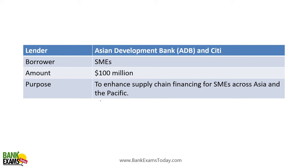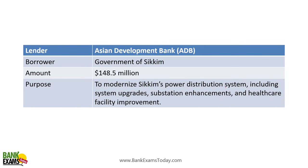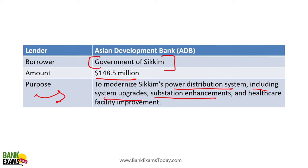Asian Development Bank — the borrowers are Citi and SMEs — 100 million dollars to enhance supply chain financing for SMEs across Asia and Pacific. Asian Development Bank also lent to the Government of Sikkim — 148.5 million dollars to modernize Sikkim's power distribution system, including systems upgrades, substation enhancement, and healthcare facility improvements.